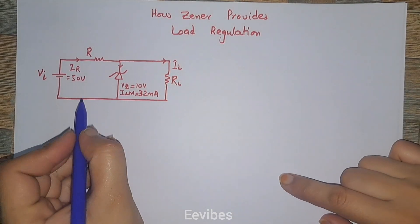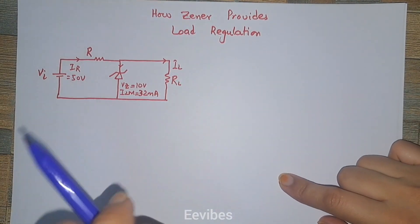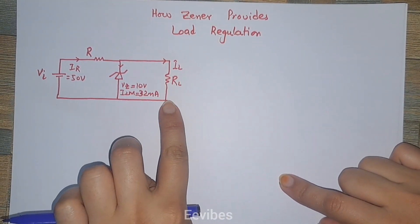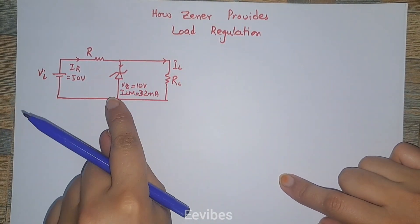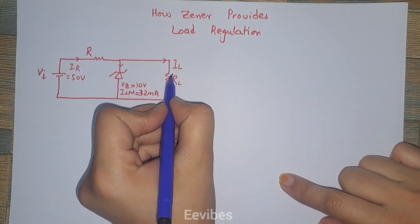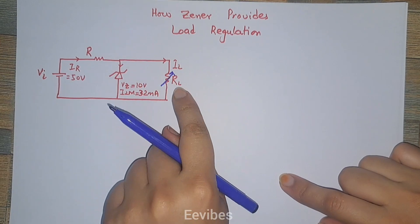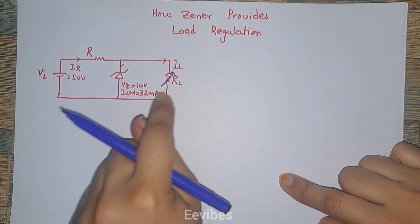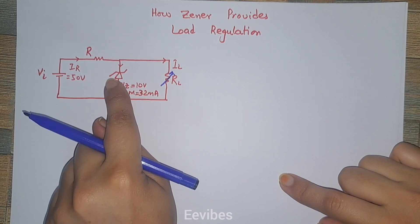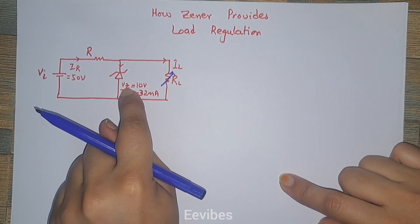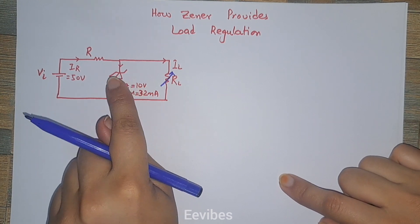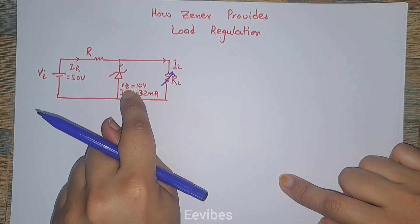Hi everyone, this is Asma Mushtaq from the Double Vibes. In this video lecture I am going to explain how the Zener diode provides load regulation in a circuit. Whenever a Zener diode is connected in a circuit and you have a variable load resistor RL, we can still provide a constant regulated output voltage according to the Vz mentioned on the datasheet of the Zener diode.